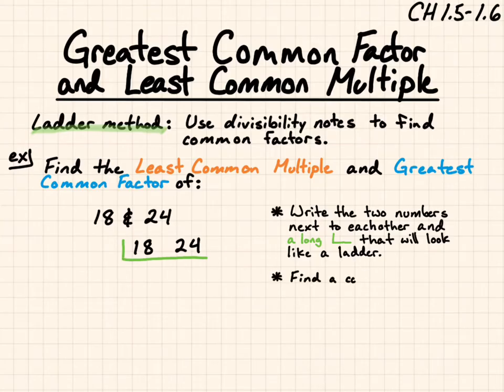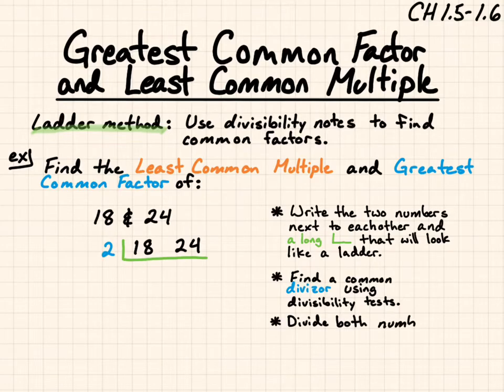We find a common divisor using the divisibility test, and you start at the lowest one. So we'll start with 2. Does 2 divide both 18 and 24? Yes, they're both even. So I'm going to divide them by 2, and I put the 2 over off to the left. Divide 18 by 2 and 24 by 2. You get 9 and 12.